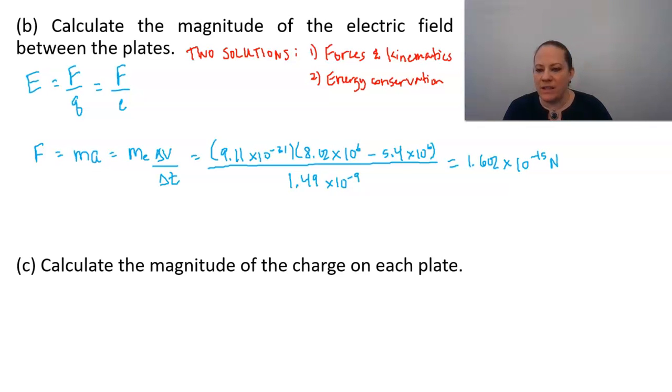Which gives us a force value of 1.602 times 10 to the negative 15 newtons. And now we can come back to this calculation of electric field as force divided by charge. So we'll take our 1.602 times 10 to the negative 15 newtons and divide it by the elementary charge, 1.6 times 10 to the negative 19th coulombs. And we will get a value of the electric field. I got 10,012 newtons per coulomb. So the scoring guideline calls it 10,000.